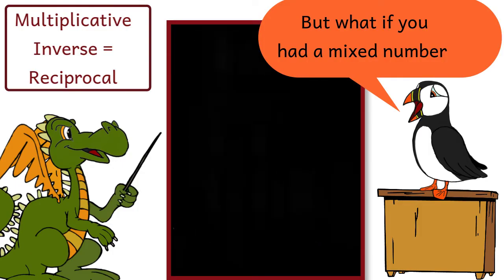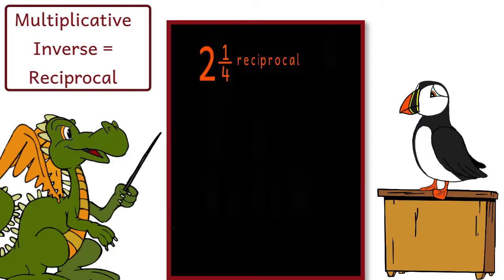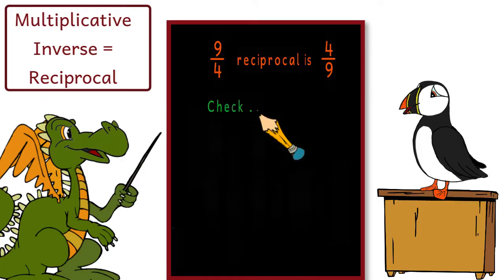But what if you had a mixed number, like 2 and 1 fourth? The first step would be to change the mixed number into a fraction. 2 and 1 fourth is the same as 9 fourths. And now we simply flip the fraction, getting 4 ninths as our reciprocal. Let's do a quick check.